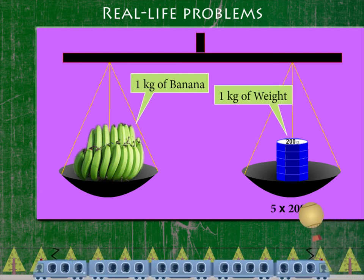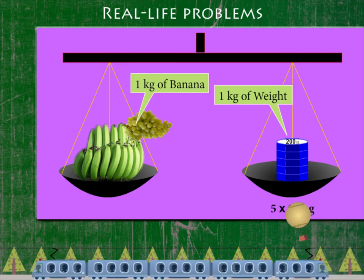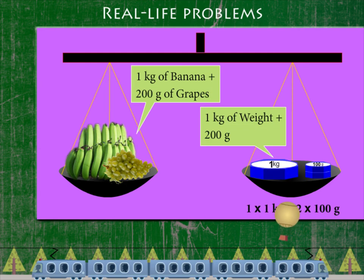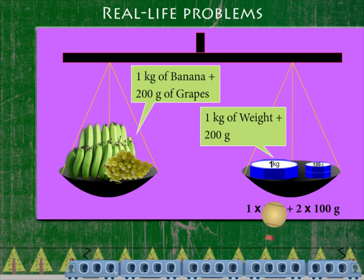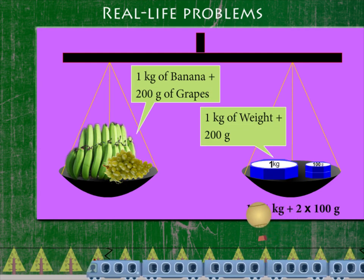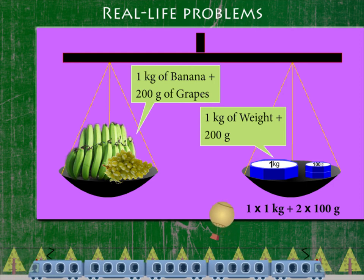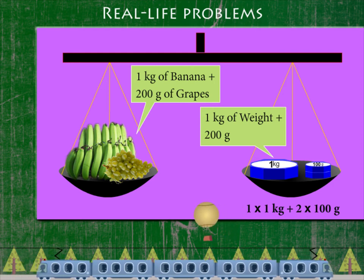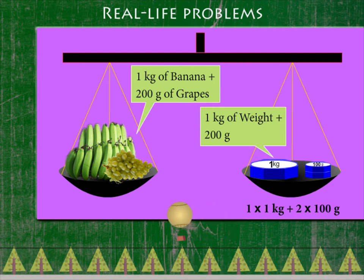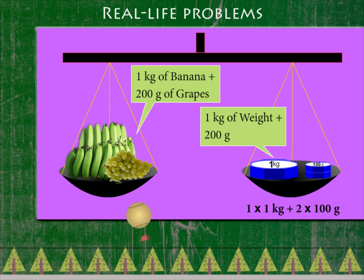Now here are some grapes with the bananas. This weighs 1 kilogram and 200 grams. So you can see the 1 kilogram weight and 2 weights of 100 grams.